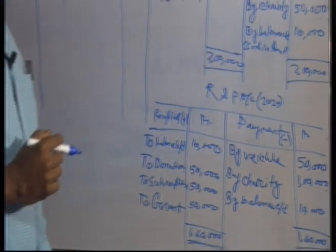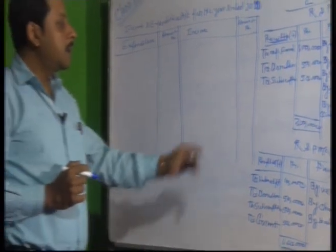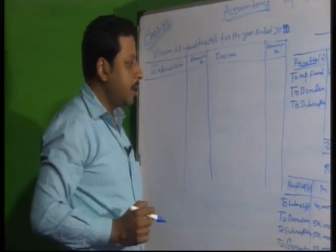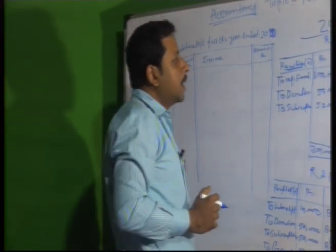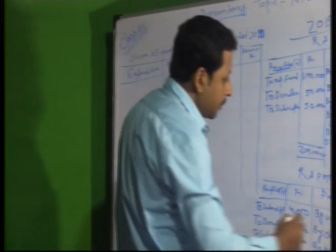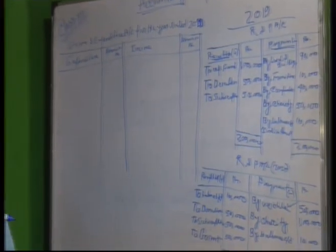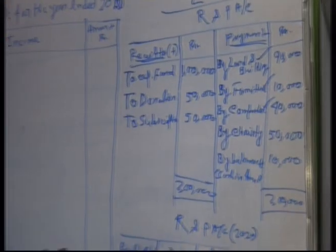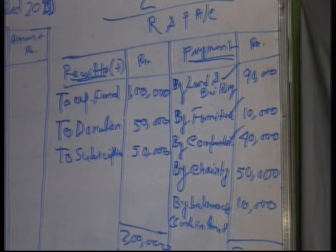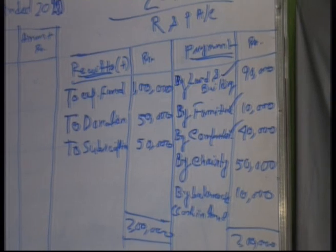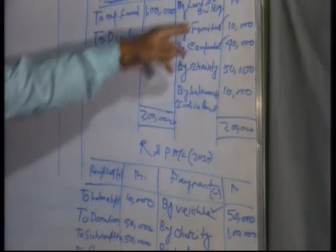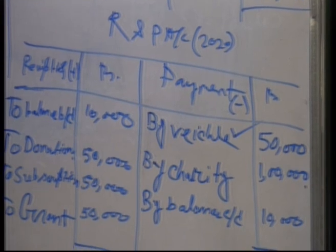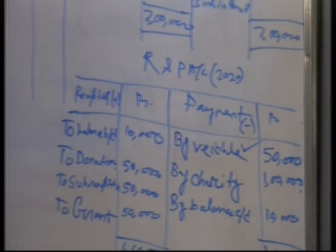Now I would like to make you understand what these two accounts are made for — one is the 2019 receipts and payments account and one is the 2020 receipts and payments account. Look at how many assets are there: the vehicle purchased this year, and from the previous year there are three assets — land and building 90,000, furniture 10,000, and computer 40,000. So if you ask how many assets are in your charitable organization now, the answer is land and building, furniture, computer, and vehicle.